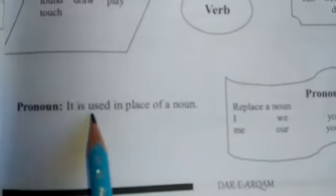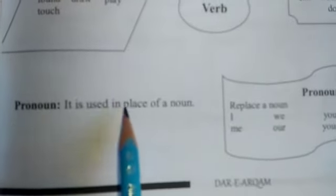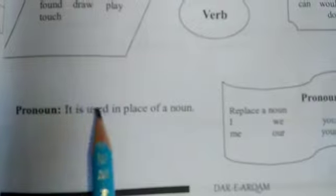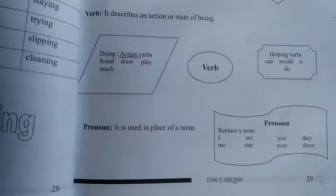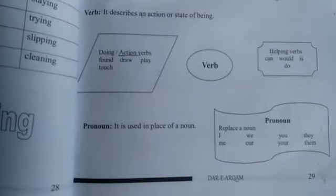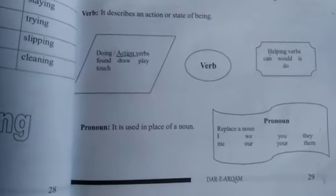Now comes towards the pronoun. It is used in place of a noun. It is a word that is used in place of a noun. Pronoun replaces a noun. I, me, we, our, you, your, they, them — the word that is used in place of a noun is known as a pronoun.